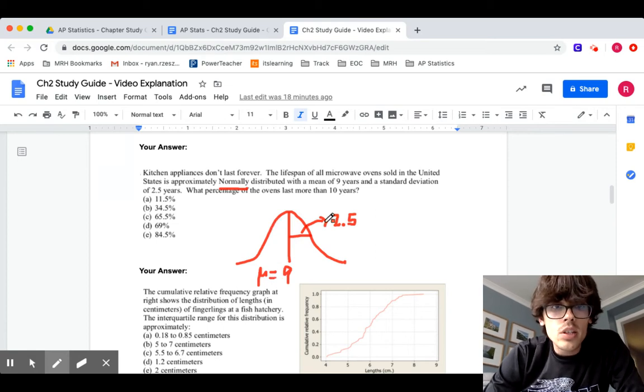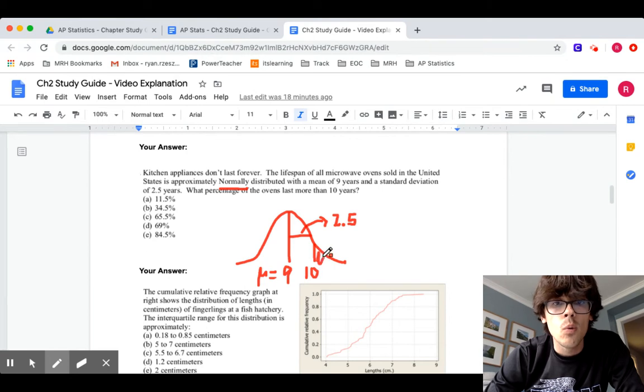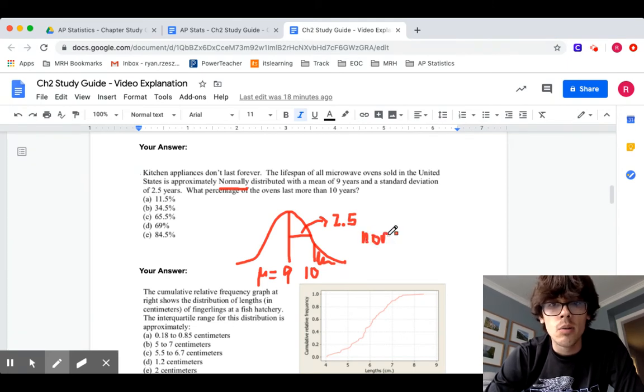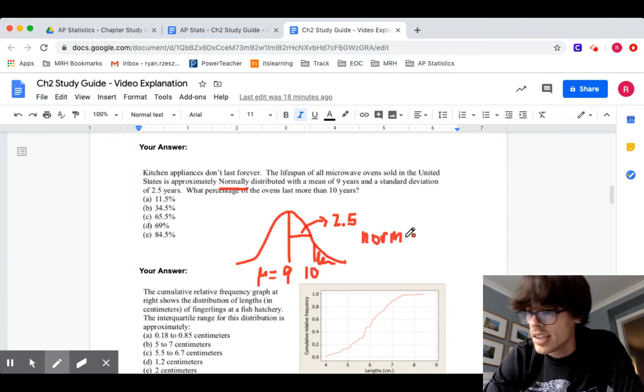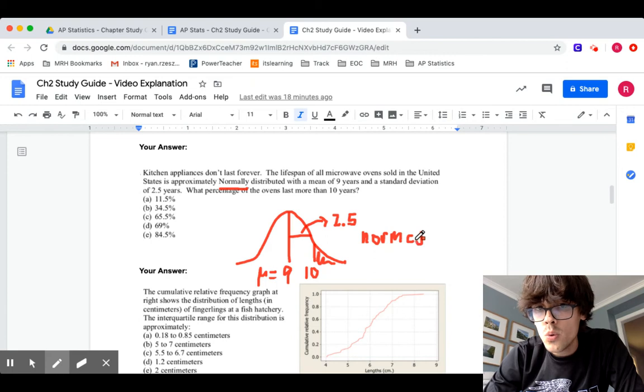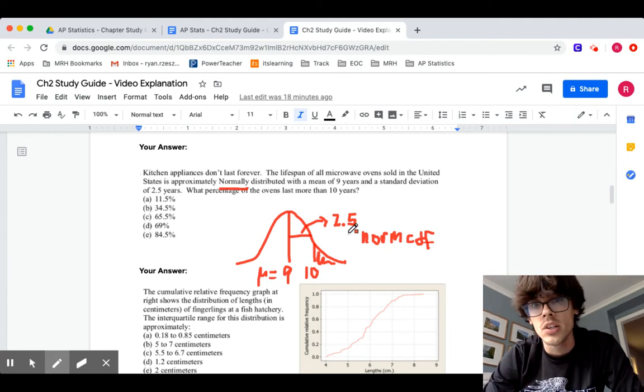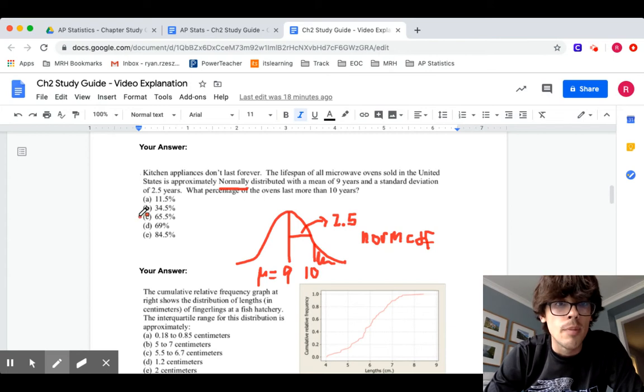They want to know what percent will last more than 10 years. 10 would be somewhere over here on the right side of my picture. More than 10 is to the right. When you want to know the area, you're going to do normal CDF. If you do a normal CDF calculation on the calculator, you type in your lower would be 10, your upper would be a big number, mean 9, standard deviation 2.5. You should end up getting about 0.345, which is choice B on our first example.